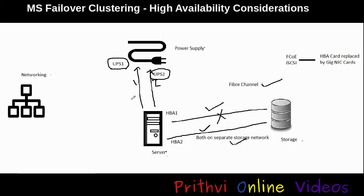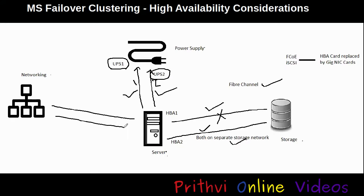Now let's talk about the networking piece. It is always advisable to have at least two NIC cards for our production network, connected through NIC teaming, so that in case of any networking or hardware issues on the NIC cards, we still have access to our applications and business users can access their data.